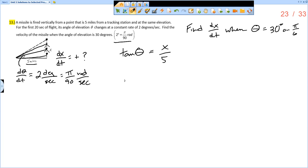And so now I'm going to take the derivative. Derivative of tangent theta is secant squared of theta d theta dt equals derivative of x over 5. Remember, this is like one fifth x. So derivative of one fifth x is one fifth times dx dt.